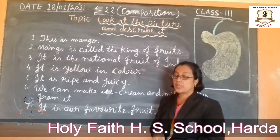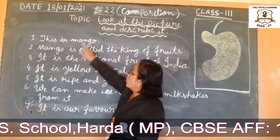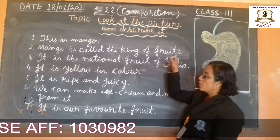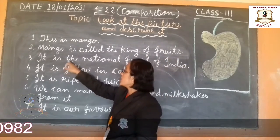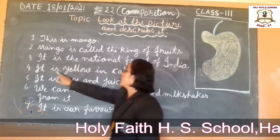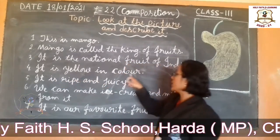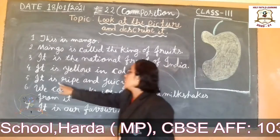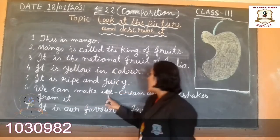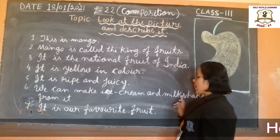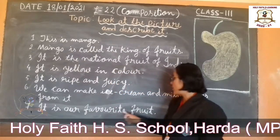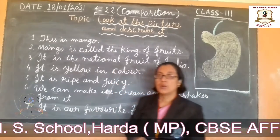Now we read: This is a mango. Mango is called the king of fruit. It is the national fruit of India. It is yellow in color. It is ripe and juicy. We can make ice cream and milkshake from it. It is our favorite fruit.